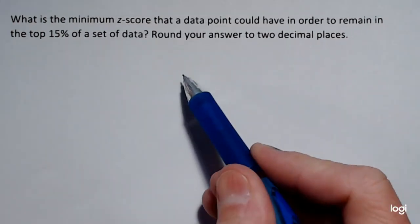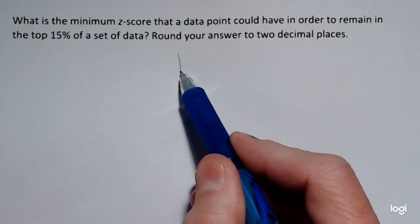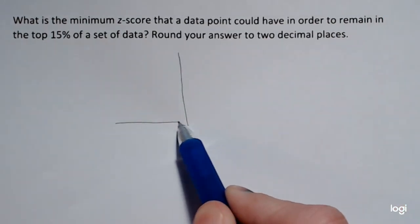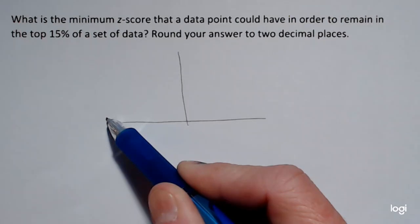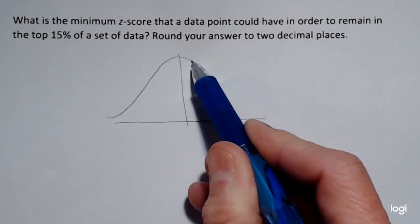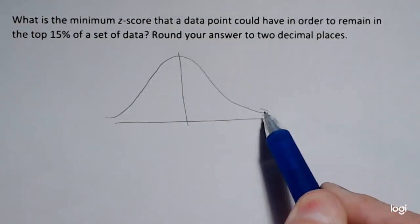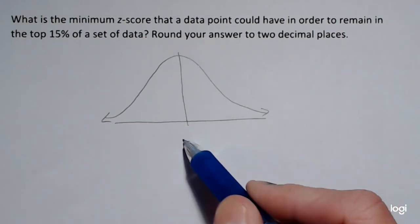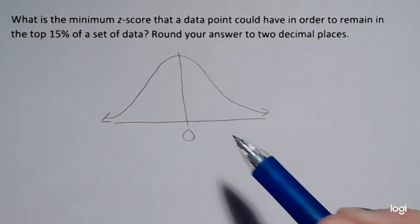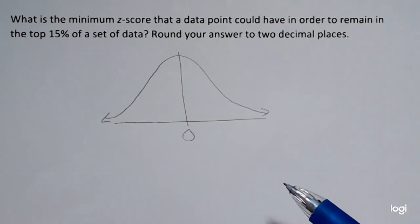So what you want to do is you want to draw what they're asking. I'm working with a z-distribution or the standard normal distribution. I need to put zero in the middle. And I want to find the z-score. I'm not given the z-score first. I'm given the cumulative area first.